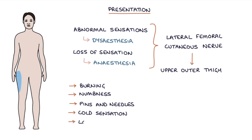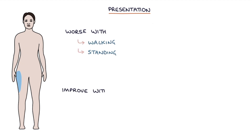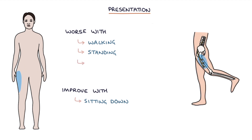There may also be localised hair loss on the upper outer thigh. Symptoms can be aggravated by walking or standing for a long duration and can improve with sitting down. Symptoms are often worse with extension of the hip on the affected side, and this movement can be used to reproduce symptoms on examination to help support the diagnosis.